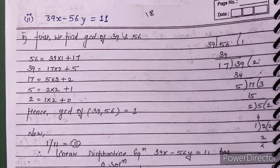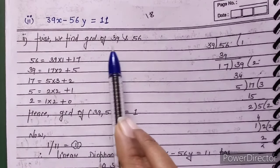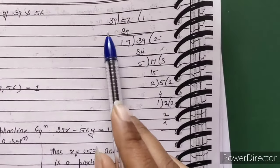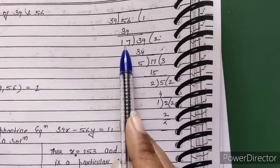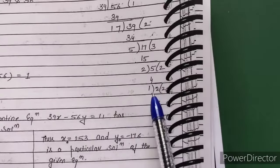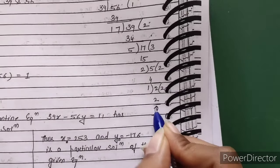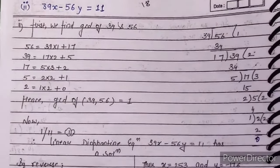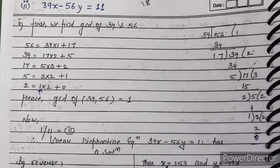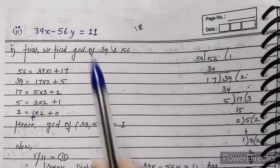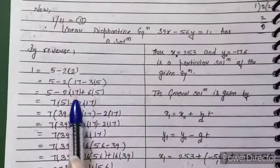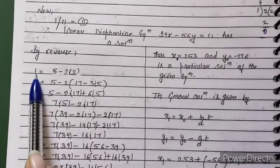Now for part B: 39x minus 56y equals 11. The first step is to find GCD of 39 and 56. Using the Euclidean algorithm: 56 equals 39 times 1 plus 17; 39 equals 17 times 2 plus 5; 17 equals 5 times 3 plus 2; 5 equals 2 times 2 plus 1; 2 equals 1 times 2 plus 0. So GCD of 39 and 56 is 1.